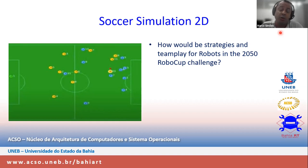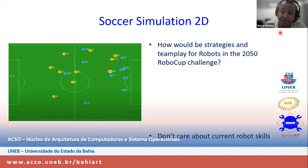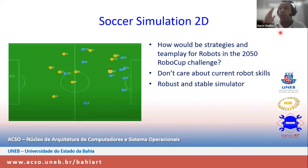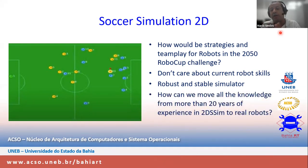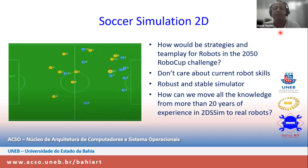As one of the oldest leagues in RoboCup, we have lots of knowledge produced over the years with many publications and interesting discoveries. But as I said, 2D simulation doesn't care about current robot skills — it's thinking about future robots that will be more perfect and efficient. The simulator is robust and stable due to its maturity as a community simulator. A question that has been emerging for many years is: how can we move all this knowledge from more than 20 years of experience in the 2D soccer scene to real robots?